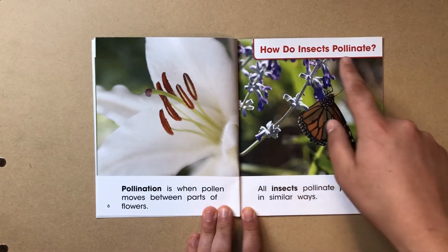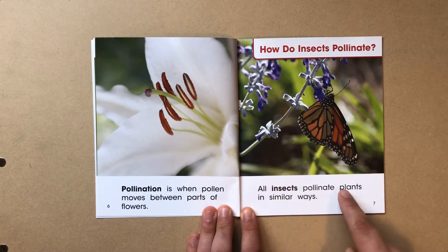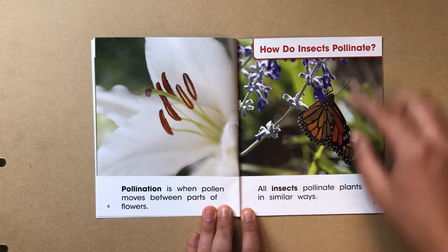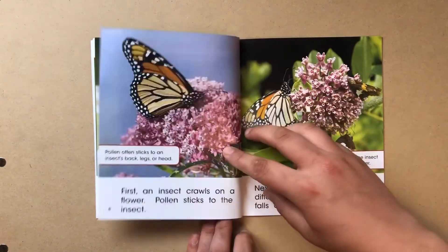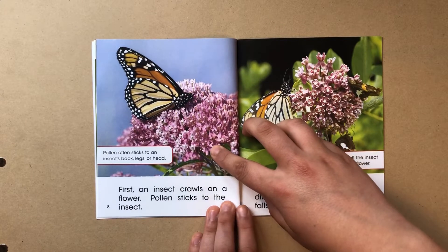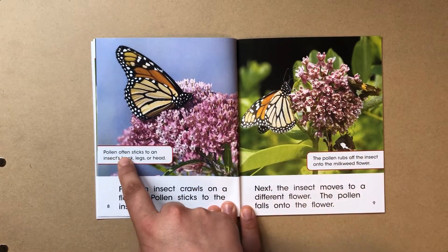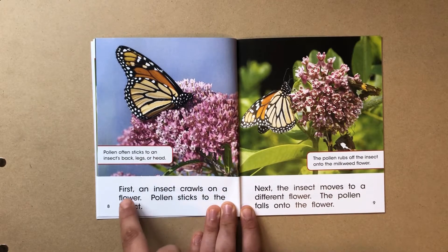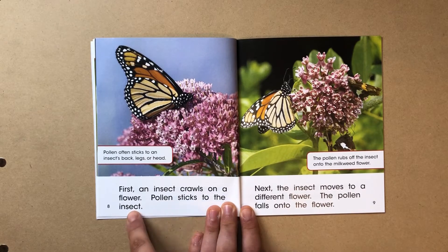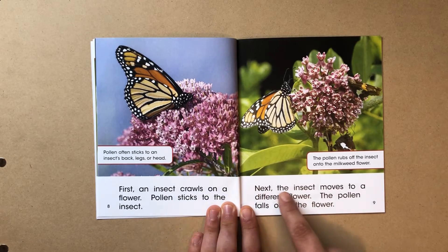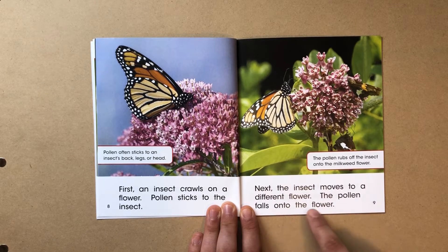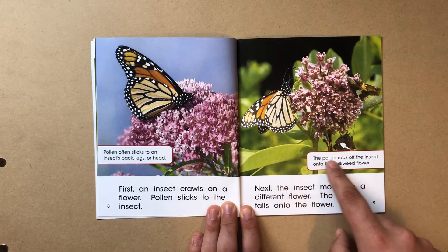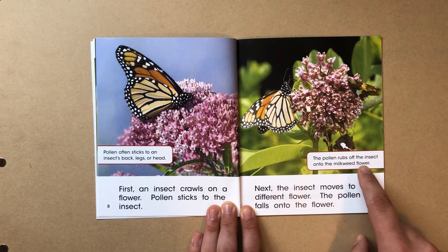How do insects pollinate? All insects pollinate plants in similar ways. Pollen often sticks to an insect's back, legs, or head. First, an insect crawls on the flower. Pollen sticks to the insect. Next, the insect moves to a different flower. The pollen falls onto the flower. The pollen rubs off the insects onto the milkweed flower.